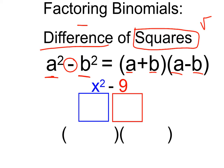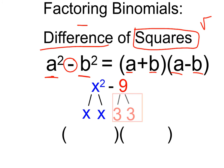Now let's take a look at this example. x squared — in order to make x squared, if I took the square root of it, I would get x because x times x equals x squared. Same thing with 9: if I was to take the square root of it, I would get 3 because 3 times 3 equals 9. I take the first term and put it in the front of both parentheses, then the second term in the back of both parentheses. The last step is to make opposite signs — one positive and one negative. The factored form of x squared minus 9 is x plus 3 and x minus 3.